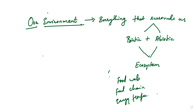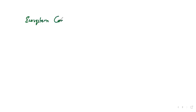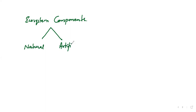As I already told you, what is environment and what is ecosystem. In this ecosystem, we basically have two types — ecosystem components. This is of two types: one termed as natural and another one which is artificial, just like natural resources and renewable and non-renewable.